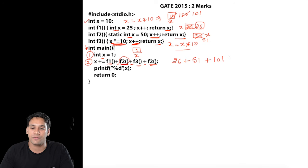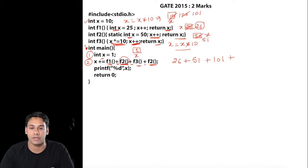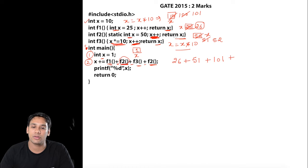Then we call the f2 function again. Since we used a static variable in f2, we do not reinitialize it. The previous value was 51, so we increment it to 52 and return that value. So f2 returns 52.